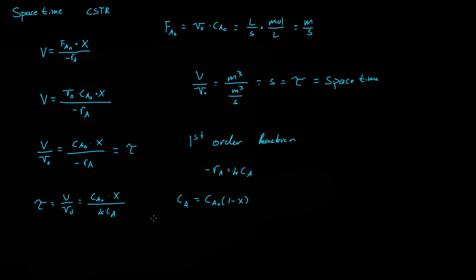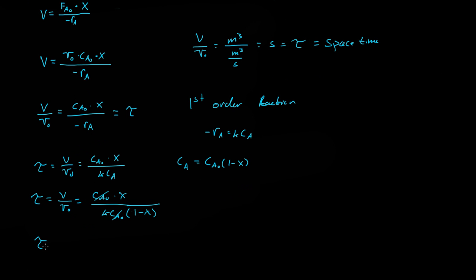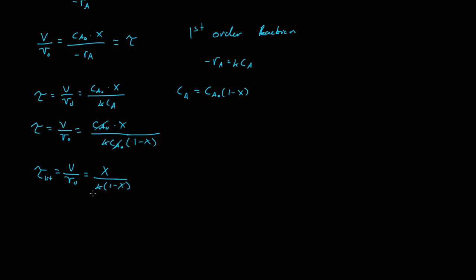So we can say that tau equals V over V₀, which equals CA₀ times X all over K·CA. Replacing CA with CA₀ times (1 minus X), the CA₀ terms cancel, and we get tau for a first-order reaction equals V over V₀ equals X over K(1 minus X). Since K changes with temperature, we can multiply both sides by K, giving K·tau equals X over (1 minus X).